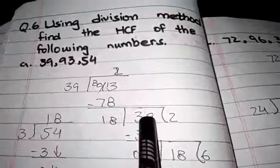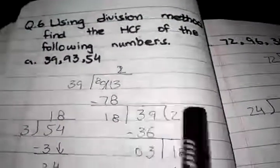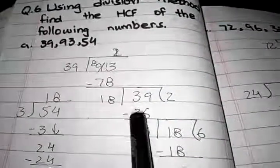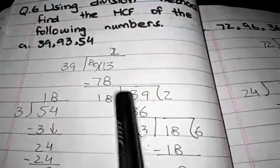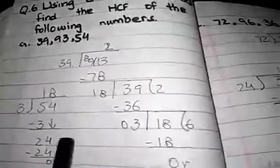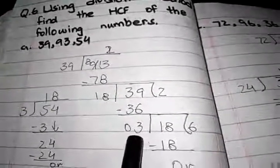The next divisor is 18 and the dividend is 39. 18 twos are 36. 9 minus 6 is 3 and 3 minus 3 is 0. Then the next dividend is 18 and 3 sixes are 18. The last remainder is 3.